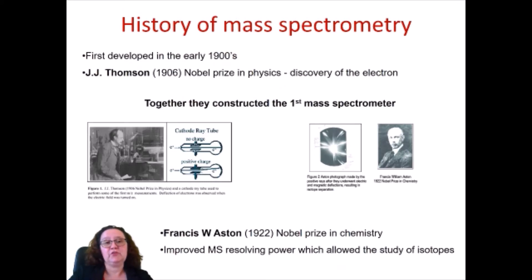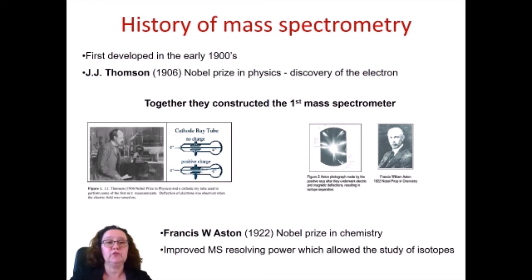The history of mass spectrometry. It was developed in the early 1900s and Thomson and Aston together constructed the first mass spectrometer. Both of them got a Nobel prize — Thomson got a Nobel prize in physics for the discovery of the electron, and Aston in the early 20s also received a Nobel prize, in his case in chemistry.